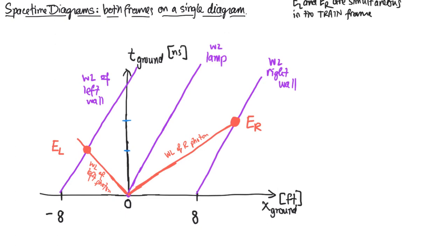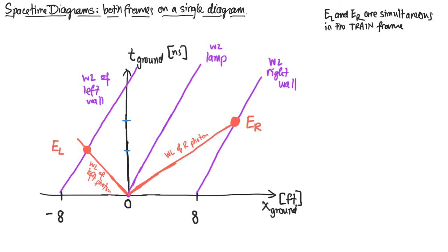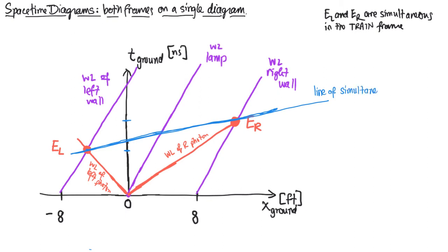We know that EL and ER are simultaneous in the train frame, so we should be able to draw a line on this plot that represents a line of simultaneity in the train frame. That line is straightforward to draw because we have two points that we know are simultaneous in the train frame - a line of simultaneity is going to connect those two points. So I'm going to draw in blue a line that connects EL and ER.